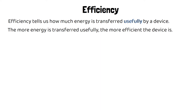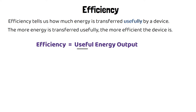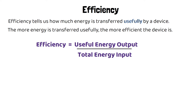There's an equation for efficiency which you need to learn. The equation is: efficiency equals useful energy output over total energy input. We measure energy in joules, so both the useful energy output and the total energy input need to be measured in joules.